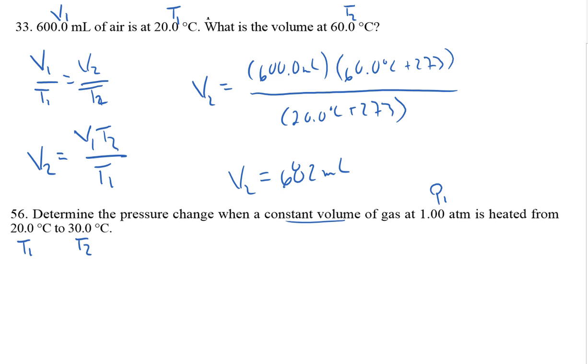Constant volume, changing pressure, changing temperature. That's Gay-Lussac's Law, where P1 over T1 equals P2 over T2. Just like with Charles' Law, pressure and temperature here are shown to be directly proportional. So if I have an increase in temperature, I'm going to estimate there will be a corresponding increase in pressure.